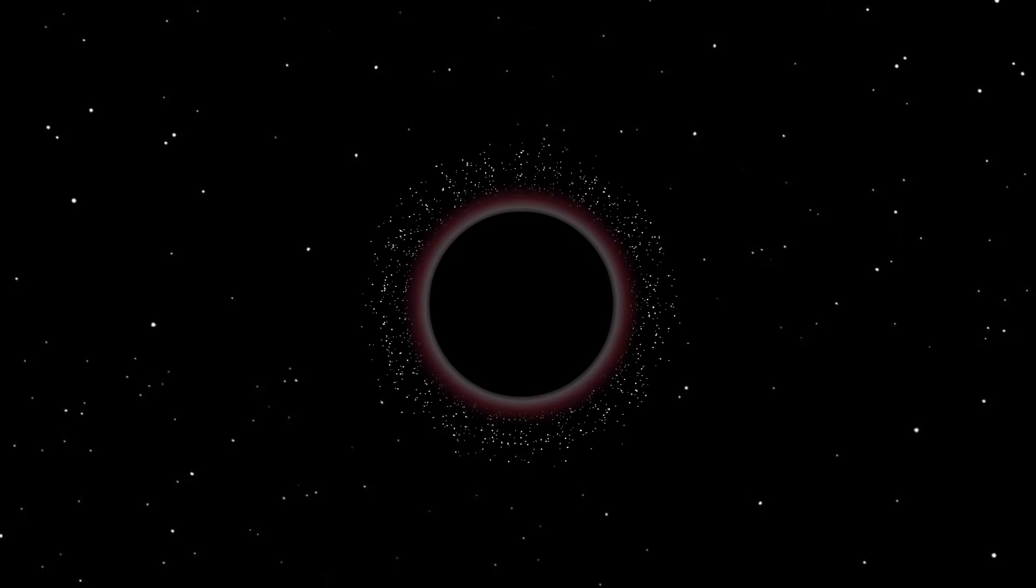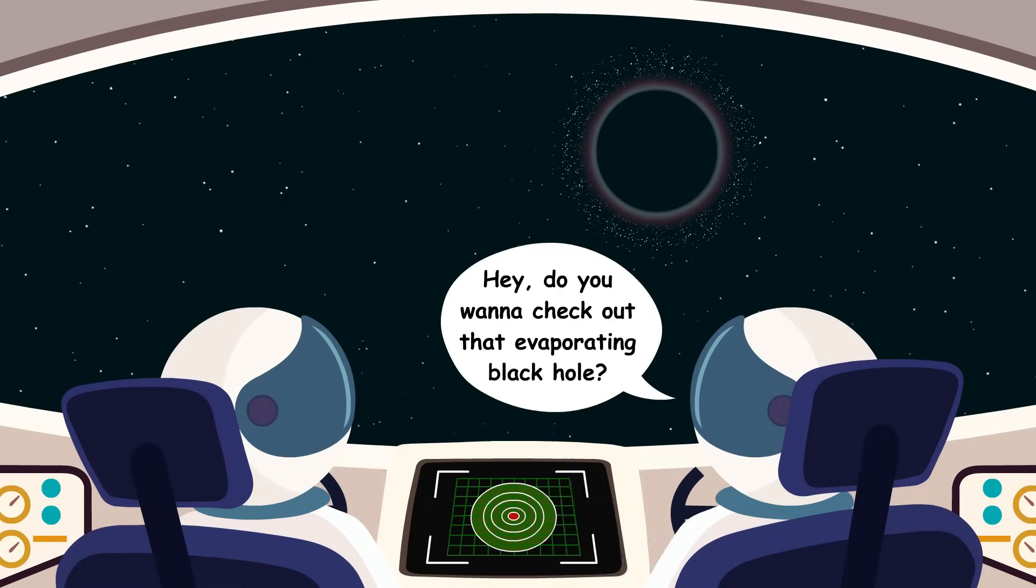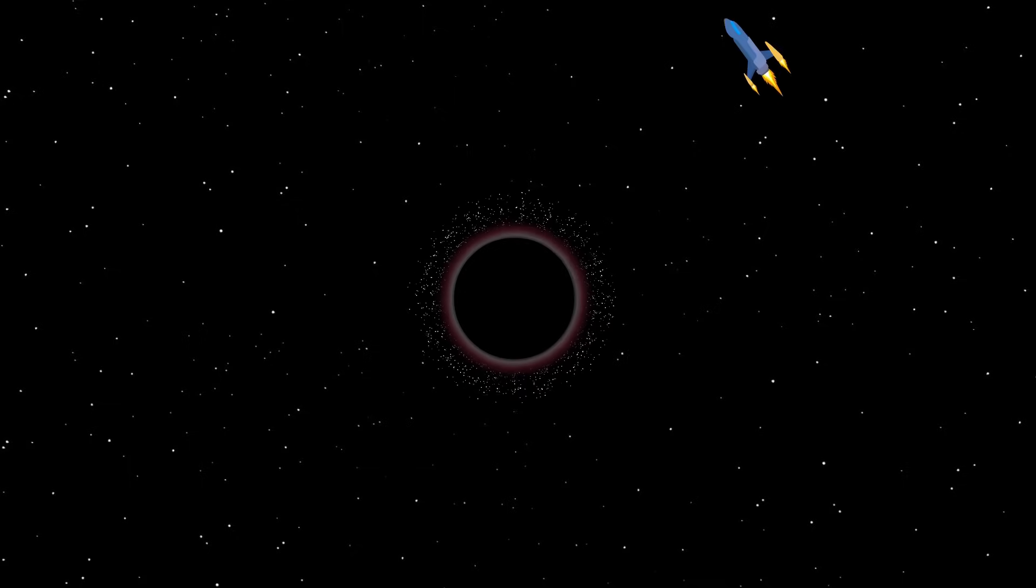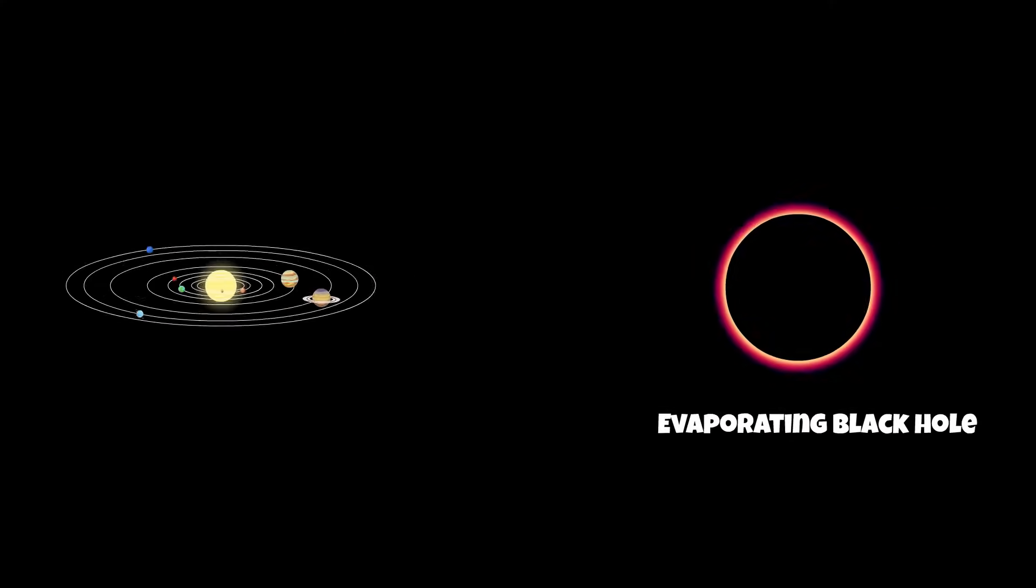No matter what, it's best not to go anywhere near an evaporating black hole, as it would be a source of lethal gamma rays and energetic particles, even if you couldn't see anything. An evaporating black hole would be detectable from Earth only when it evaporated within the solar system, or close to a star near us.